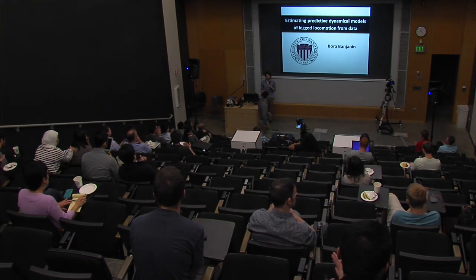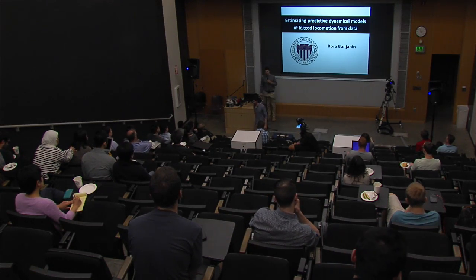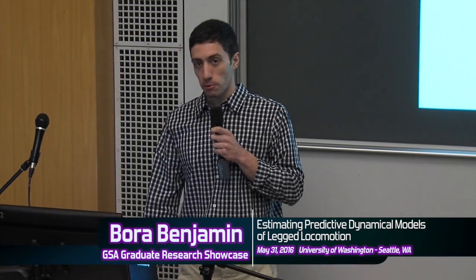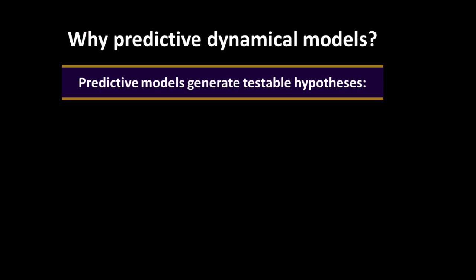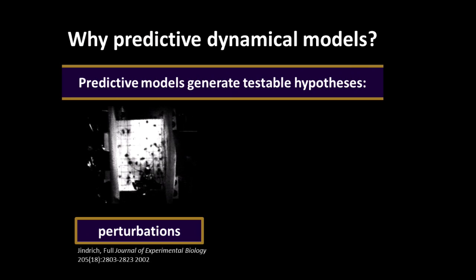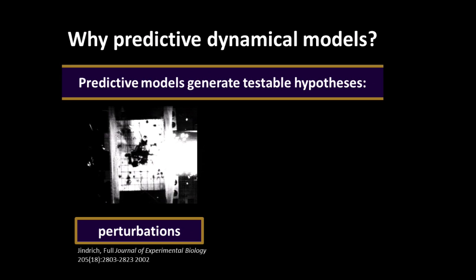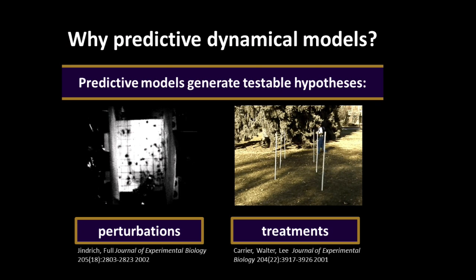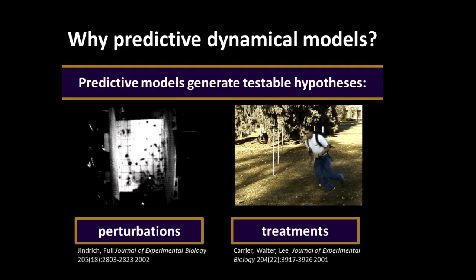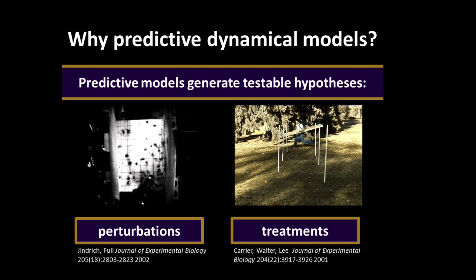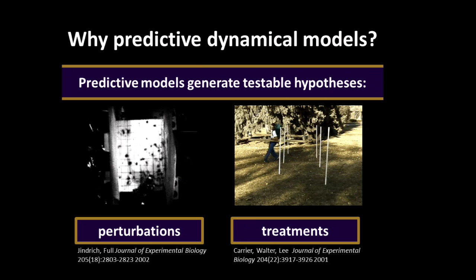Hi everyone. My name is Bora, and my advisor is Professor Sam Burden. We work in the Biorobotics Lab. My talk is on estimating predictive dynamical models of locomotion from data. Predictive models in locomotion can serve as low-cost, low-effort prototyping tools. Generally, steady state is considered a starting point, and we hope to expand the scope of these models to predict perturbations. This video shows a cockroach running at steady state with a cannon attached to its back that fires, applying a perturbation. We also want to predict various treatments — such as undergraduates running through an obstacle course with backpacks or contraptions that change the moment of inertia.